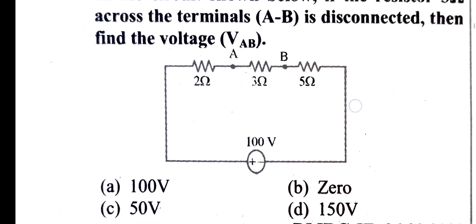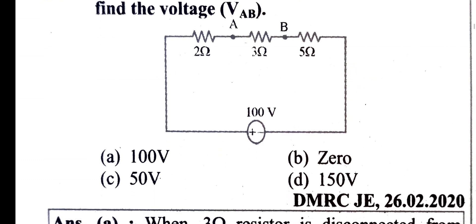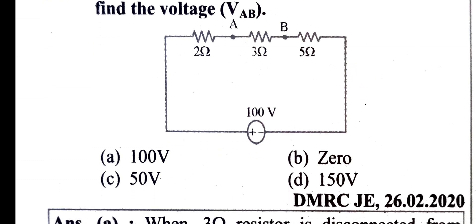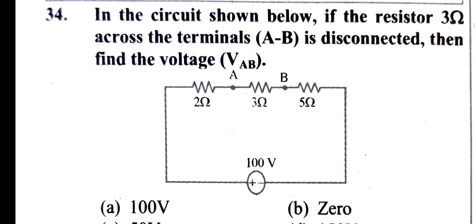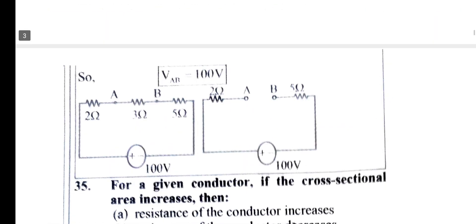If the resistor has 3 ohm across the terminals AB and AB is disconnected, find the voltage VAB. This is called the circuit — 3 ohm across the terminals AB, it is disconnected. That is not the voltage across VAB. Now the figure is disconnected. We have a 3 ohm resistor — this is an open circuit.